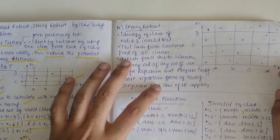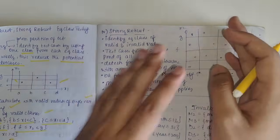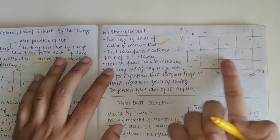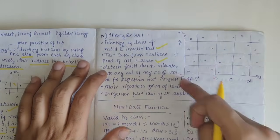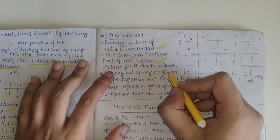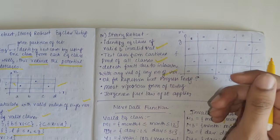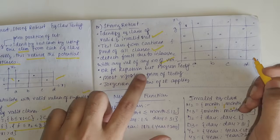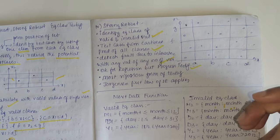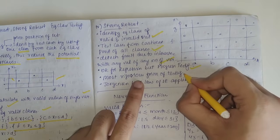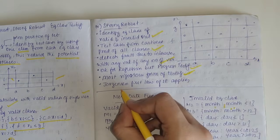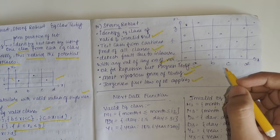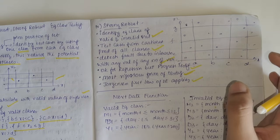Strong robust ECT identifies equivalence classes from both valid and invalid classes. Test cases form the Cartesian product of all classes. It detects faults due to interaction with any value of any number of variables. This is the most rigorous form of testing — preferred for progression testing — and it obeys Jorgensen's first law of software engineering.